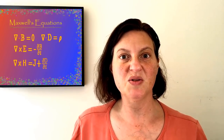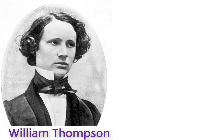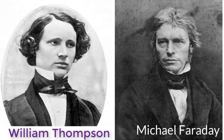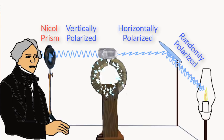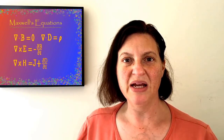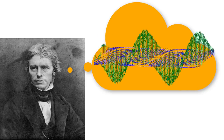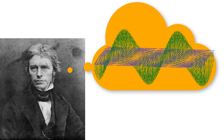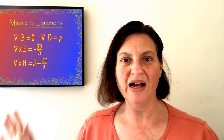Let's start with a little backstory. In 1845, a 21-year-old student named William Thompson, later knighted Lord Kelvin, inspired the already famous 54-year-old Michael Faraday to conduct an experiment that found a link between electricity, magnetism, and light. The next year, Faraday postulated that maybe light was really vibrations of electric and/or magnetic fields — although he called them electric and magnetic lines of force.